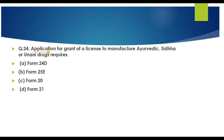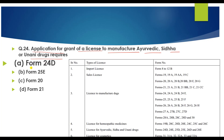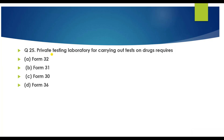Question number 24: Application for grant of a license to manufacture Ayurvedic, Siddha, and Unani drugs requires which form? Question number 25: A private testing laboratory for carrying out tests on drugs requires which form? The answer is Form number 36.